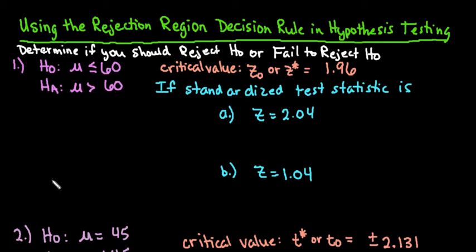For this video, I want to show you how to use the rejection region decision rule in hypothesis testing. We are going to decide if you should reject the null hypothesis or fail to reject the null hypothesis. I do have other videos that show you how to find your Z* or Z-naught critical value or your T critical values depending upon which hypothesis test you are using.